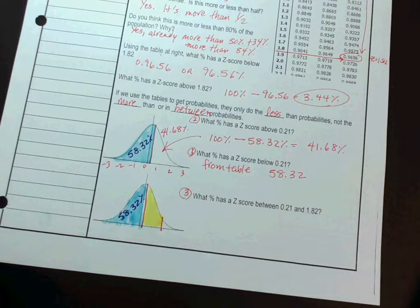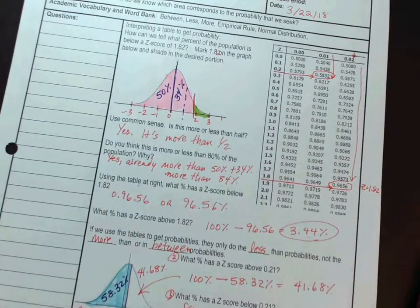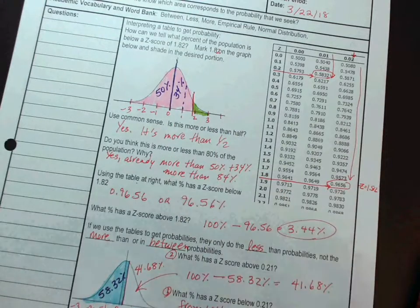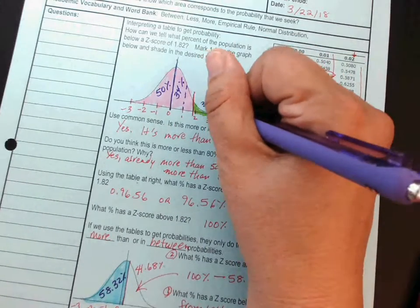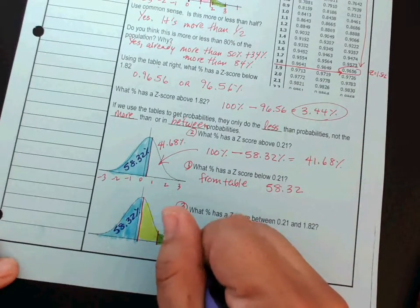And, if you look, this one where the 1.82 is and shading to the right, that's the same area as we had up here. What did we say that was? We said that was 3.44%. So, I can go ahead and just copy that down. 3.44%.